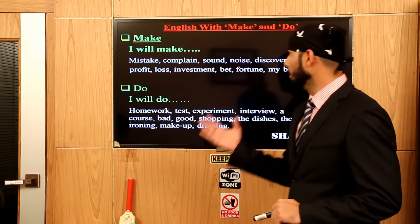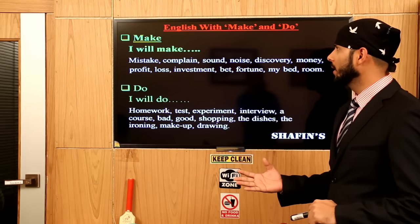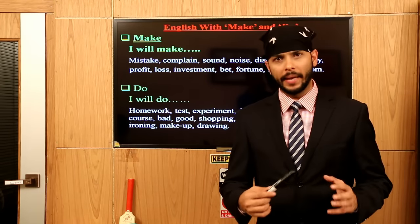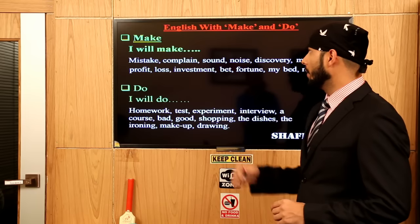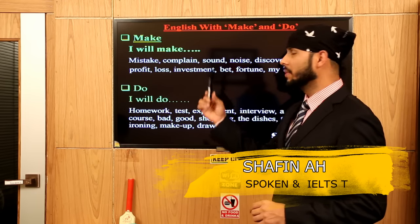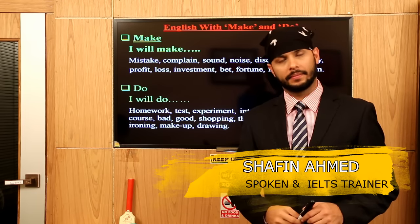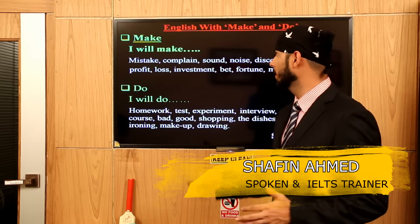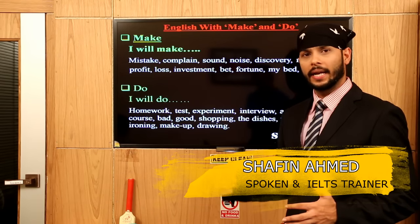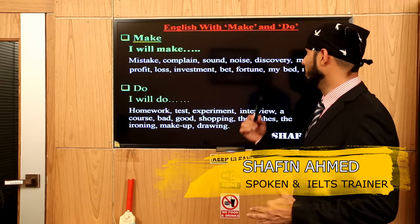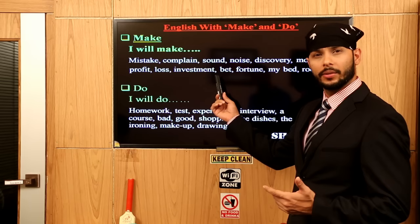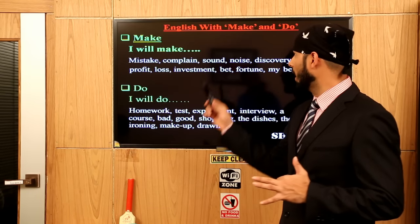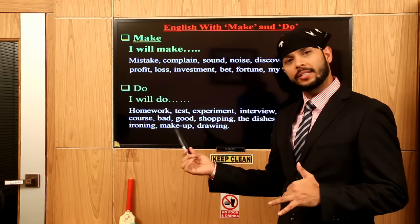We have to use these words. I will make mistakes. Don't say 'I will mistake' — the correct form is 'I will make mistakes.' I will make a complaint. I will make sound — not 'I will sound,' but 'I will make sound.'